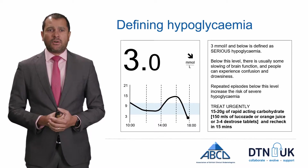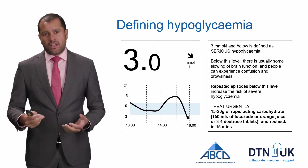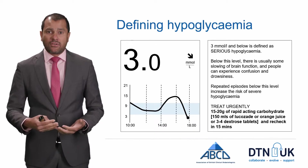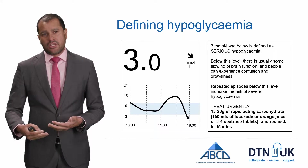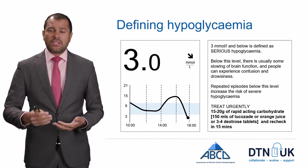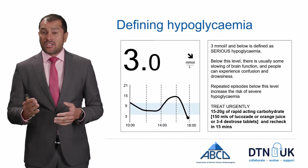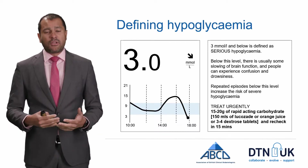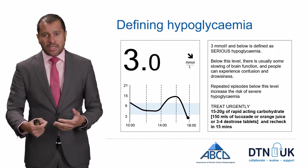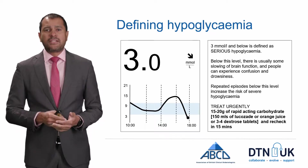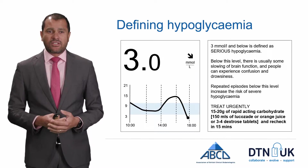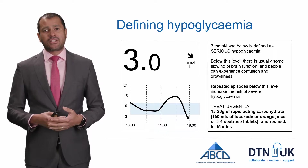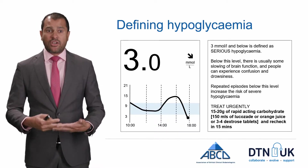Below 3.0 millimoles per litre is defined as serious hypoglycemia, because below this level we know there's some slowing of brain function. Some people might feel a bit confused, have difficulty speaking, or look a bit imbalanced. Even those who don't feel those symptoms are experiencing some cognitive impact. Repeated episodes below this level can increase the risk of severe hypoglycemia needing third-party assistance, so if you've got a sensor reading below 3 millimoles per litre you should treat urgently.